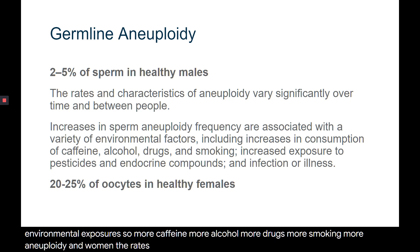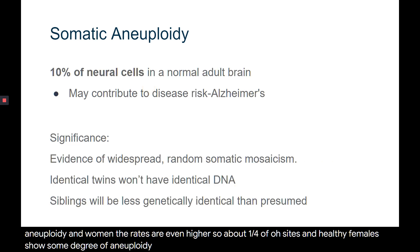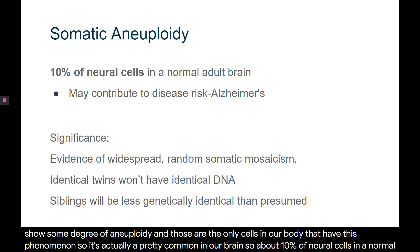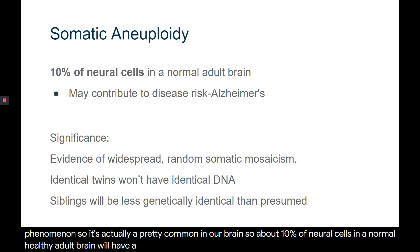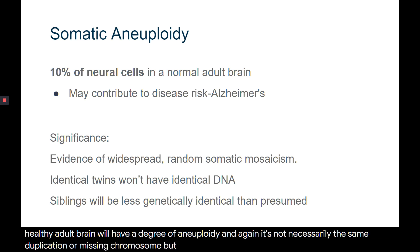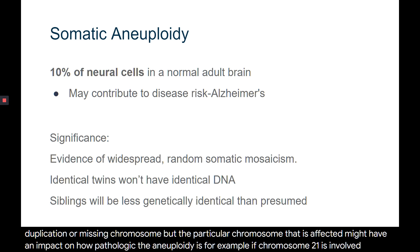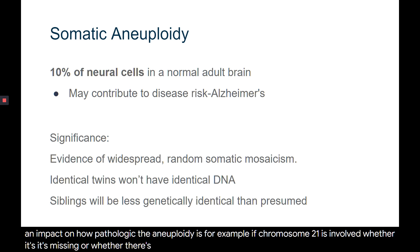In women the rates are even higher — about a quarter of oocytes in healthy females show some degree of aneuploidy. And it's actually pretty common in our brain: about 10% of neural cells in a normal healthy adult brain will have a degree of aneuploidy. It's not necessarily the same duplication or missing chromosome. The particular chromosome affected might impact how pathologic the aneuploidy is — for example, if chromosome 21 is involved, whether it's missing or there's more than two copies, there is an increased risk of Alzheimer's disease.